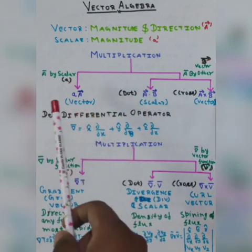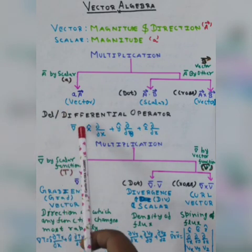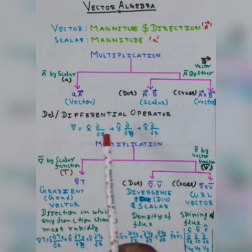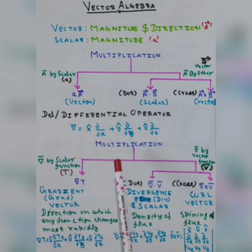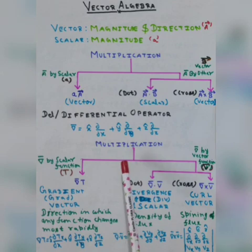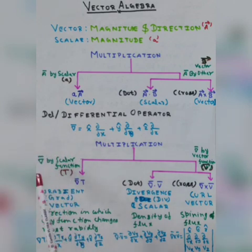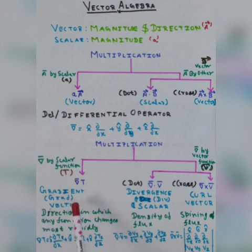Here we are defining the del oblique differential operator. This is the del function. Di by dx, d by dy and d by dz are taken in the x, y, z directions. This whole quantity is known as the del operator. Similarly, we define the multiplication like the above situation. When the del operator is multiplied by any scalar function, it is known as a gradient. In short form, it is also a vector.